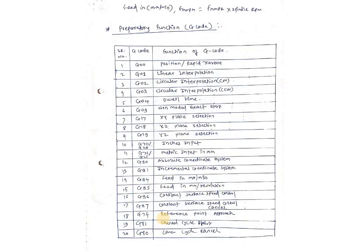The most important part we have to remember is the G code — that is your preparatory functions. We will see them one by one. First code is G00 — it is used for rapid traverse or positioning. Suppose I want to travel my tool from one location to another location in a fast way, so you can use G00 for positioning the tool relative to your workpiece. Next, G01 — it is linear interpolation. If you want to travel the tool from point number 1 to point number 2 in a linear manner only, we have to use the G01 code for linear interpolation.